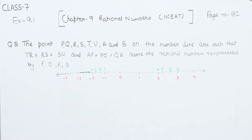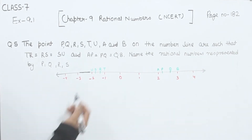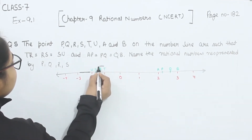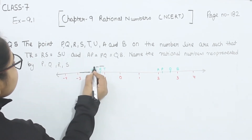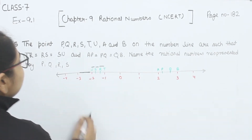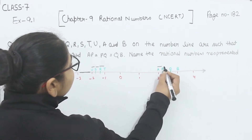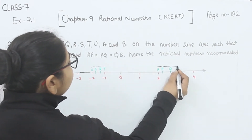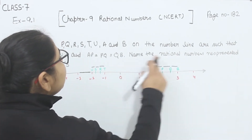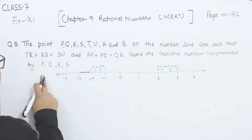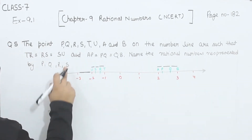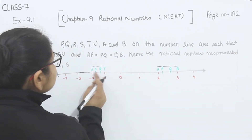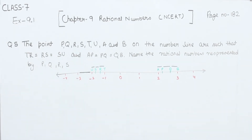The points P, Q, R, S, T, U, A, B on the number line are such that TR = RS = SU — that means three of these are equal — and AP, PQ, and QB, three of them are equal. Name the rational number represented by P, Q, R, and S. This is PQ and this is RS, which we have to find the value of.